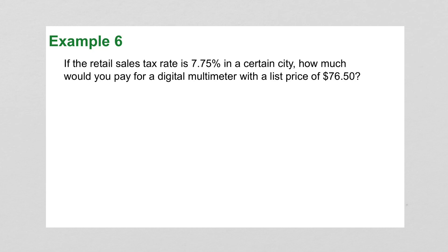If the retail sales tax rate is 7.75% in a certain city, how much would you pay for a digital multimeter with a list price of $76.50? So we're going to put the list price on the bottom, and our percent over 100, and we're looking for the part. So cross multiply, 100P is equal to $592.875, divide by 100, and we have $5.93 when we round up.